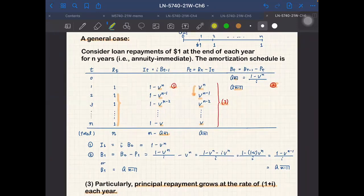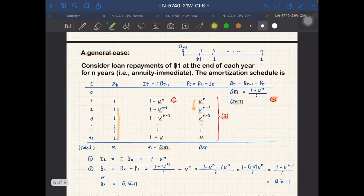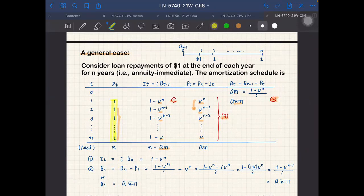Secondly, an important point in this section is this table. This is a kind of standard table for constant repayments. You can see that the repayment amount is always one for N years. In this case, what is I_T? What is P_T? The point is that P_T grows at the rate of one plus I.